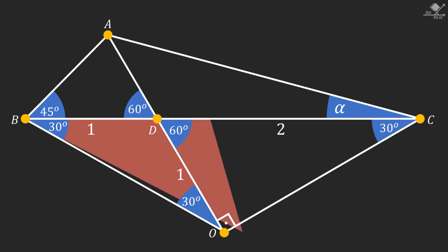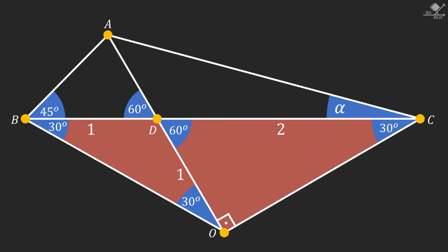Notice that this large triangle is also isosceles since its base angles are equal. Therefore, these two sides must be congruent.